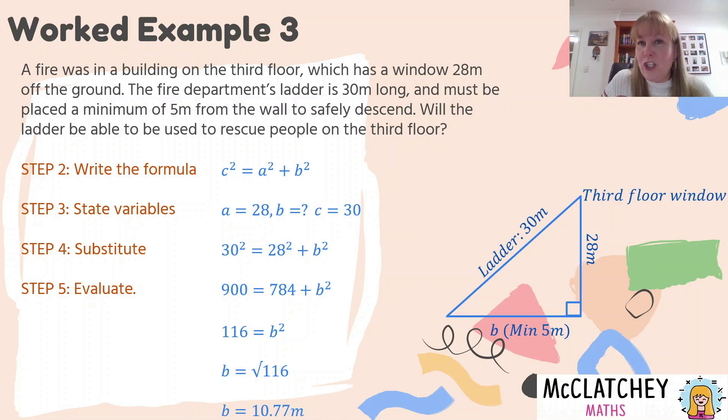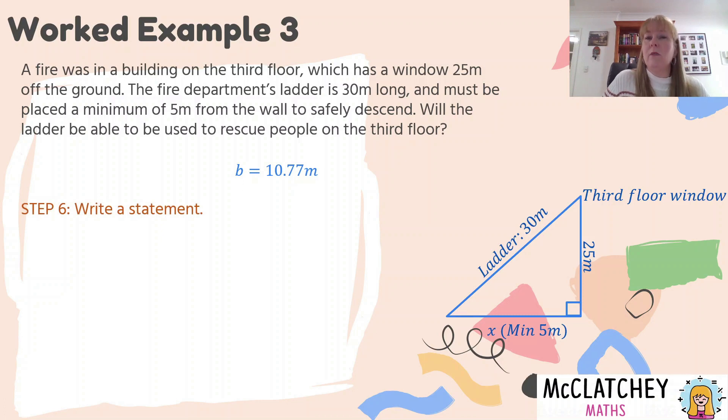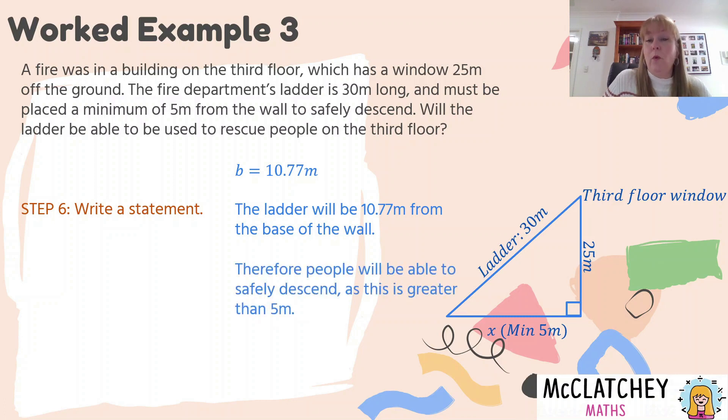Now, we're not quite finished yet. We do need to write a statement. We have worked out how far the base of the ladder is from the wall. But we need to answer the question, will the ladder be able to be used? Okay, so we know that B is 10.77. So we need to write that statement. The ladder will be 10.77 from the base of the wall. Therefore, people will be able to safely descend, as this is greater than five meters. So we've answered the question, yes, the ladder can be used. And we've also said that 10.77 is greater than five meters. So we've answered that condition that's in our question. So hence the ladder can be used. That's a full complete answer.